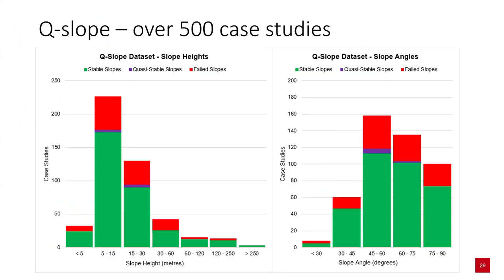Q-slope is based on over 500 case studies from around the world. The slope heights and slope angles it was applied to are shown in these figures. Green refers to stable slopes, purple to quasi-stable slopes, and red to failed slopes. Quasi-stable slopes were defined by major signs of cracking and dislodgement with the potential for failure, or those identified by monitoring systems. In most of those cases, the quasi-stable slopes failed shortly after they were identified.